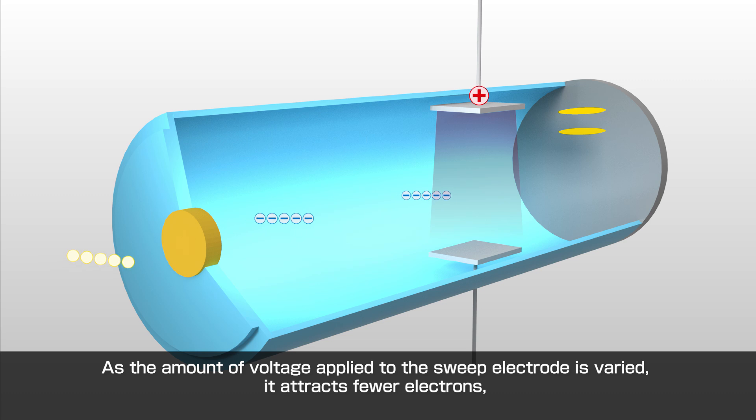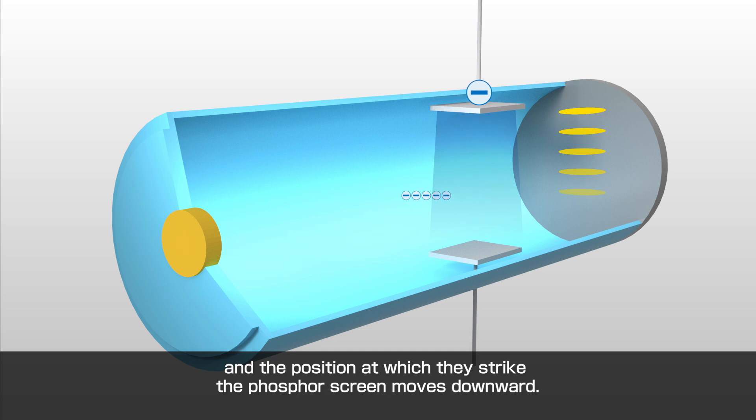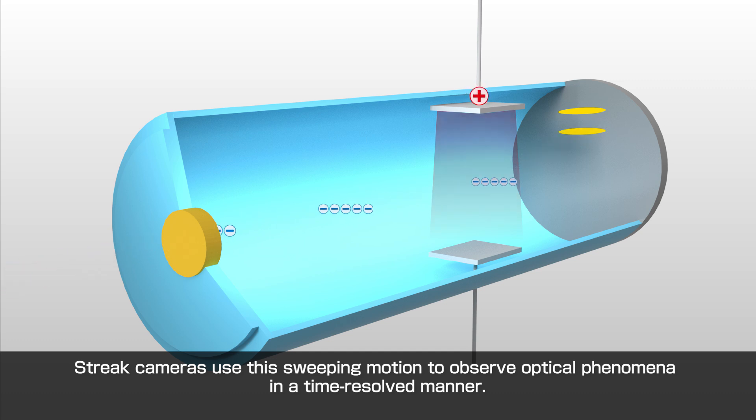As the amount of voltage applied to the sweep electrode is varied, it attracts fewer electrons, and the position at which they strike the phosphor screen moves downward. Streak cameras use this sweeping motion to observe optical phenomena in a time-resolved manner.